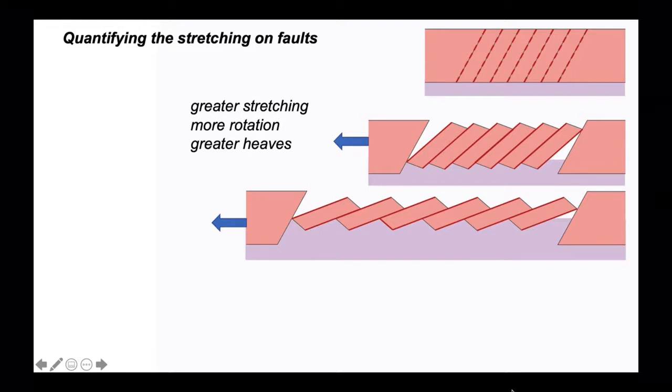We want to try and quantify the stretching of faults, and we can use two features for that. We can use the rotation history, but also we can look at the offset on the individual faults as represented by their heave.